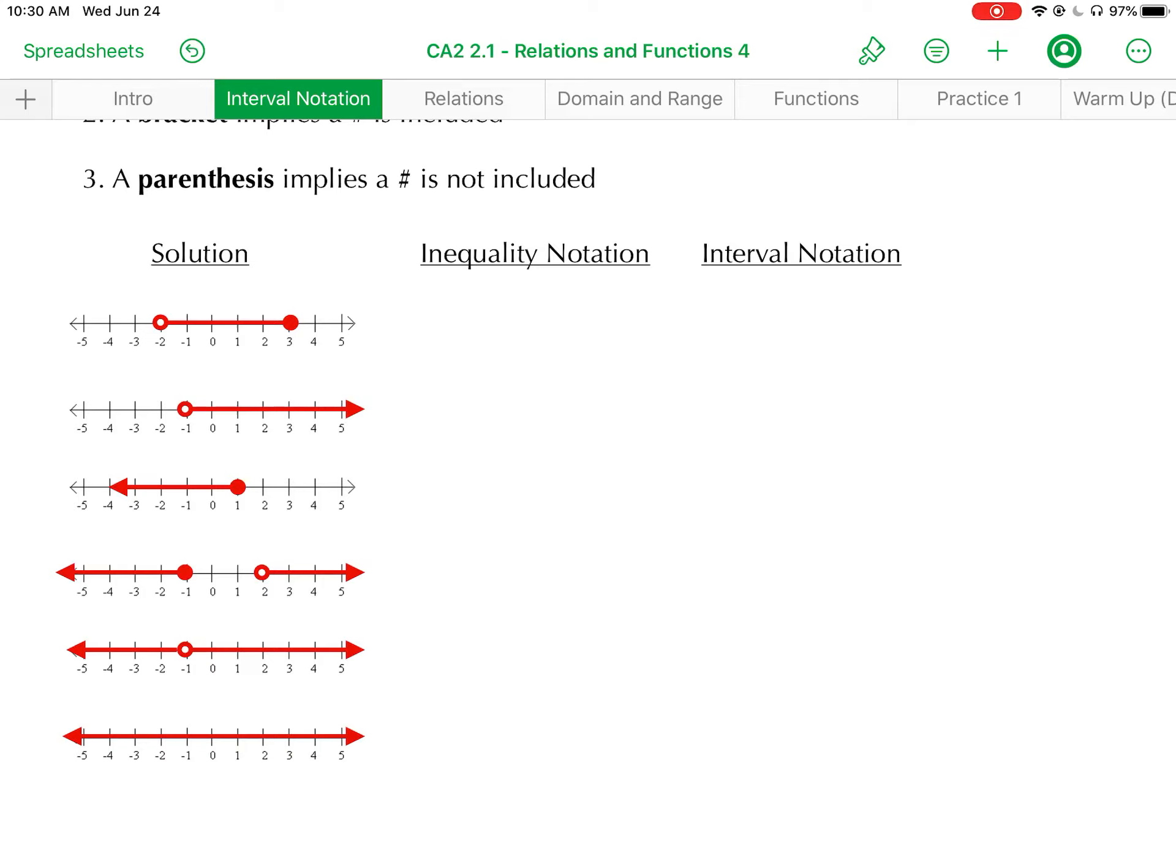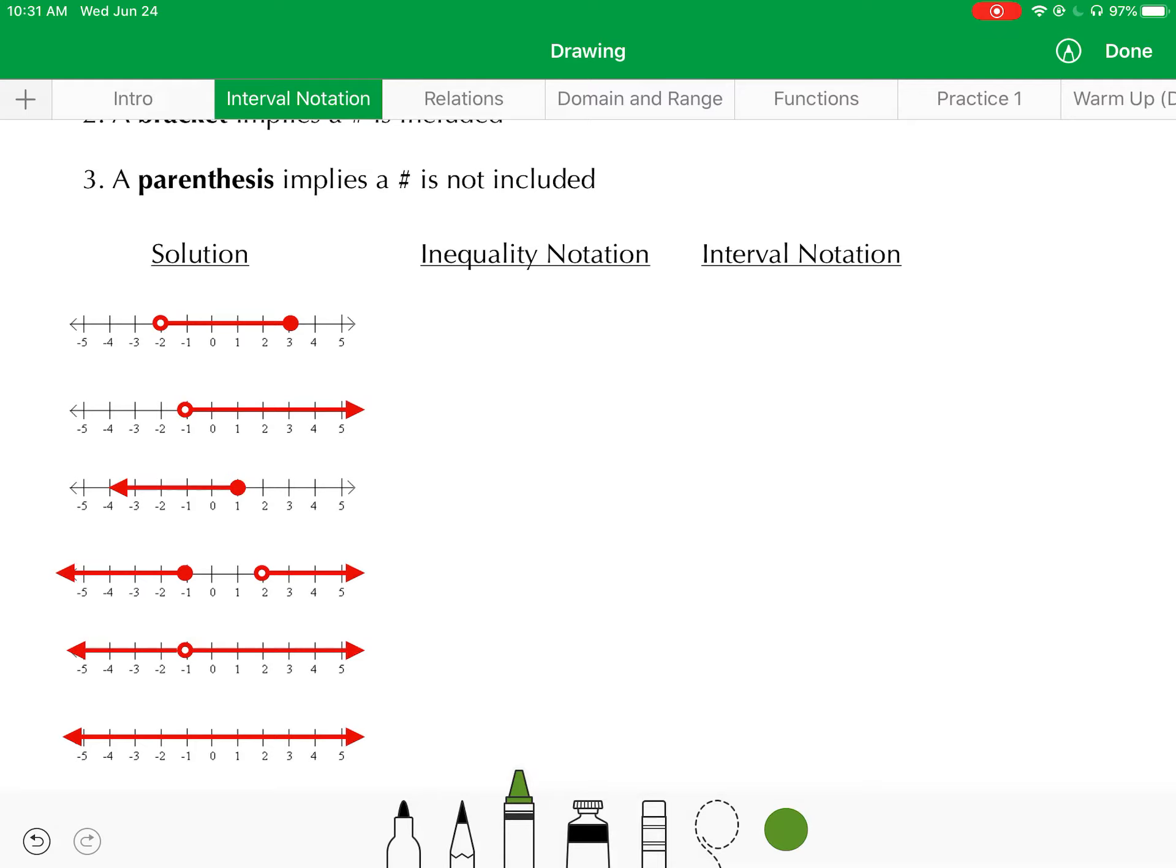So the first solution set is any number between negative 2 and 3, including 3, but not including the negative 2. That's because the negative 2 has an open circle on it. However, the 3 has a solid circle. So as an inequality, that would simply look like negative 2 is less than x, which is less than or equal to 3.